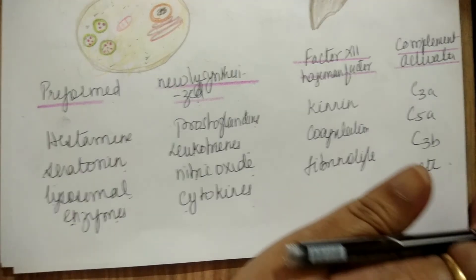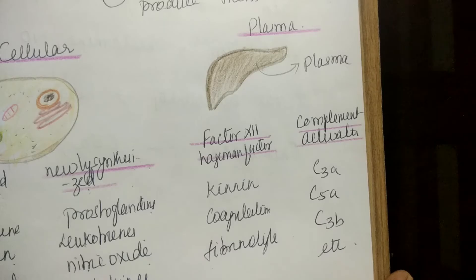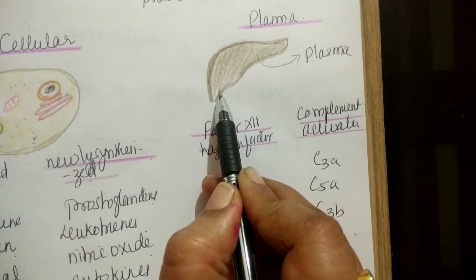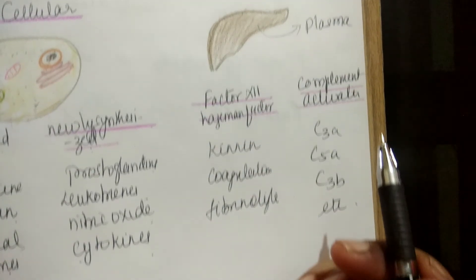Plasma-derived chemical mediators. The liver first produces plasma.